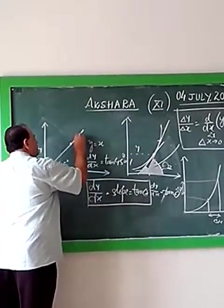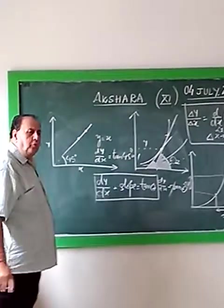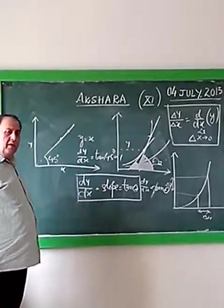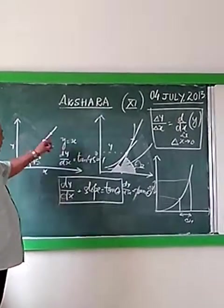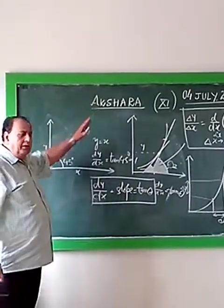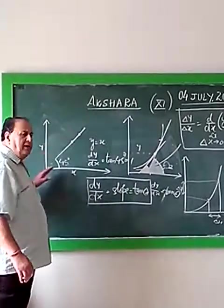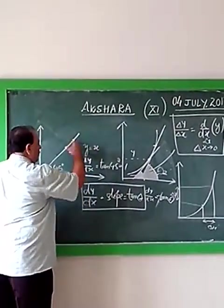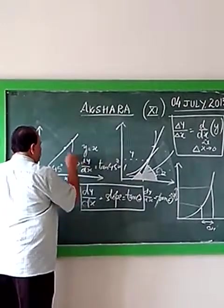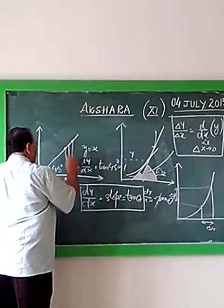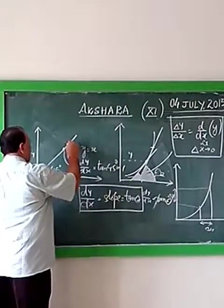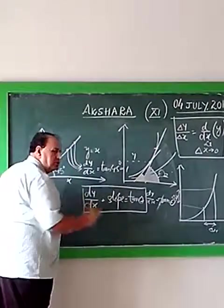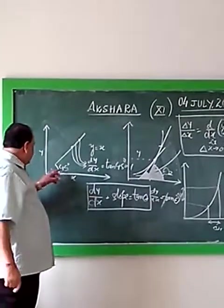I ask you what is the value of slope here - how does this change with respect to this? For this also slope will be the same because at every point here, tangent drawn at all these points will be the line itself.